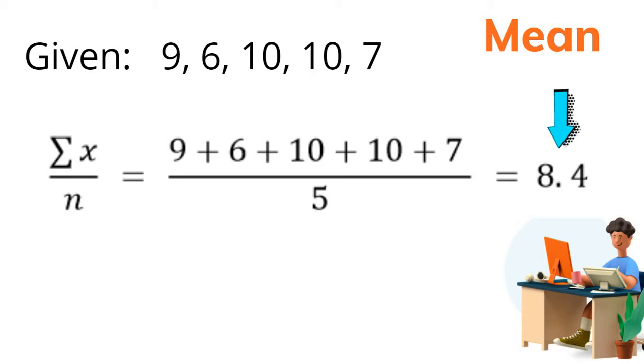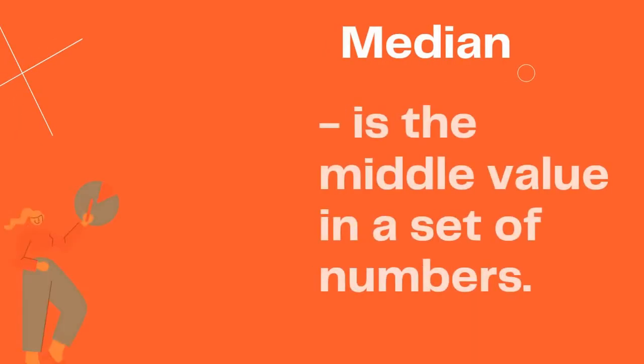we simply add the given numbers in the data set divided by the number of observations. So that will be 9 plus 6 plus 10 plus 10 plus 7, all over 5, equals 8.4. And that is the mean of the given data set. And how about median?